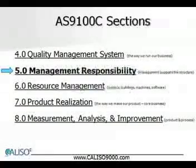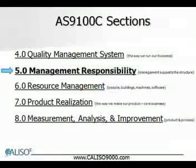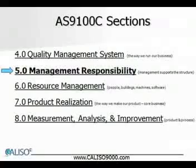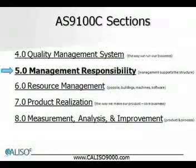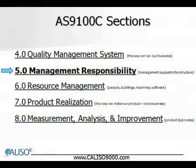Section 5 is titled Management Responsibility. This section defines the requirements for top management to actively participate in the development and implementation of quality objectives, and to periodically evaluate the effectiveness of the quality management system. In addition to the ISO 9001 requirements, AS9100C takes management responsibility further and requires that management measures product conformity and on-time delivery, and takes appropriate remedial actions when the planned result is not or will not be achieved.